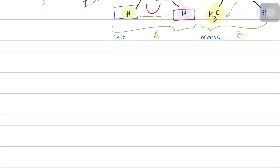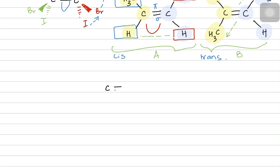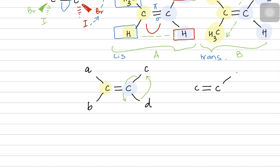In today's video, we're going to talk about geometrical isomers in detail. When there's a carbon-carbon double bond, both carbons — let's call them the yellow and the blue ones — are bonded to two more groups each. Let's say the yellow one is bonded to group A and B, while the blue one is bonded to C and D. The main concern is that when one of these atoms is rotated, it should create a new structure. For example, if I try to rotate carbon number 2, which is the blue carbon, it should create something new. In order for it to create something new, it's really important that C and D aren't the same.